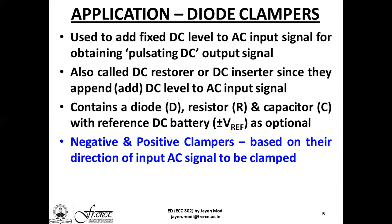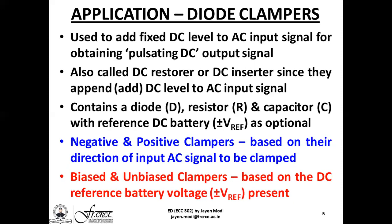If you want to add a positive DC reference value, you go for a positive clamper; if you want to add a negative DC reference value, you go for a negative clamper. The second category of classification is biased clampers and unbiased clampers. These circuits let you control the amount of DC shift added to the AC input signal by adding a reference battery voltage — positive (+Vref) or negative (−Vref). An unbiased clamper has no DC reference battery voltage present.